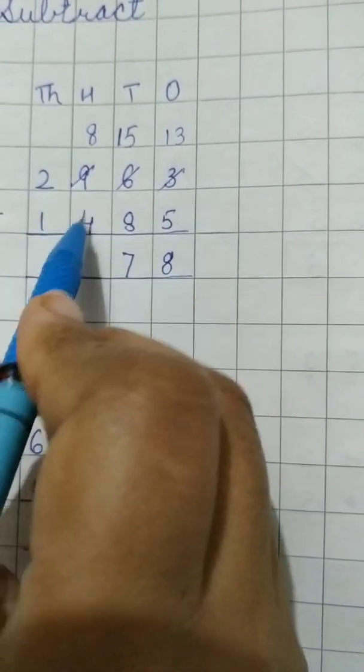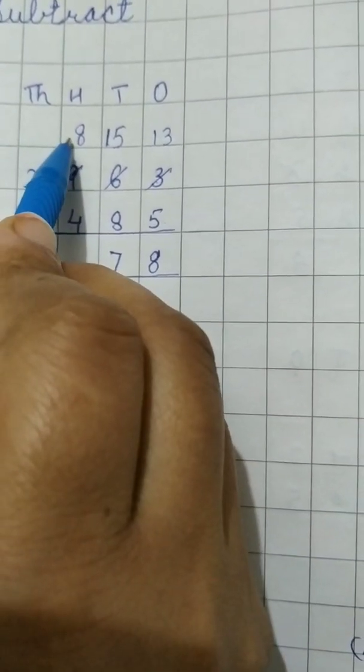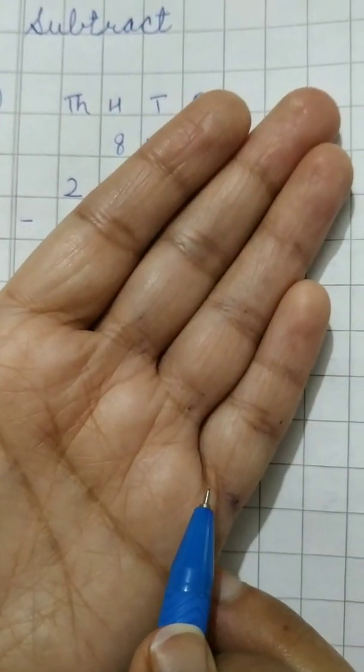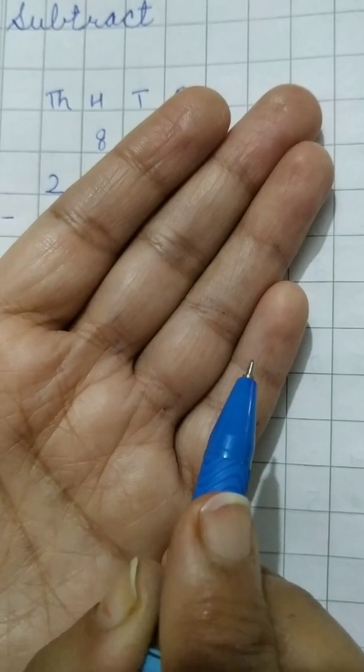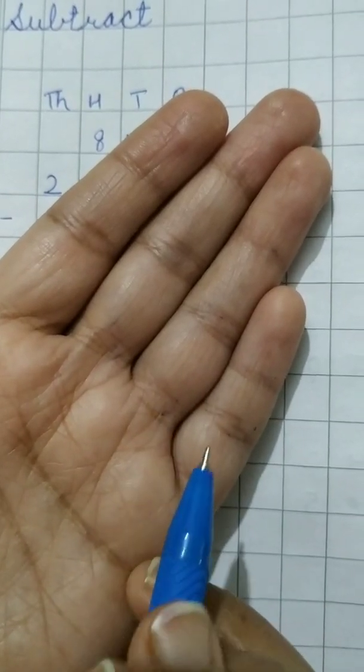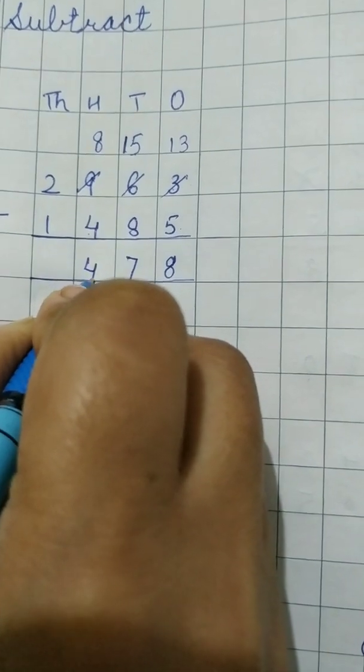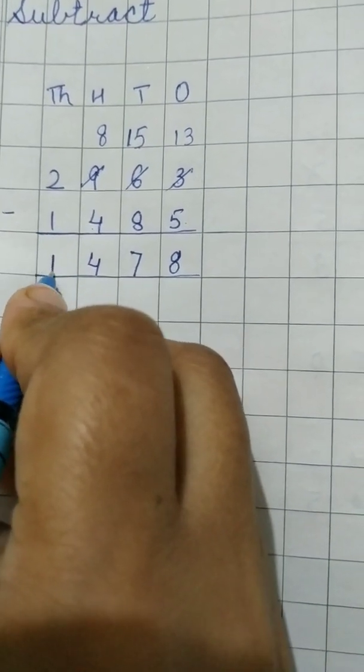Now 8 minus 4. Now 8 is greater. So it is possible to subtract 8 minus 4. We have to go from 5 till 8. 5, 6, 7, 8. 1, 2, 3, 4 lines. So 8 minus 4, 4. 2 minus 1, 1.